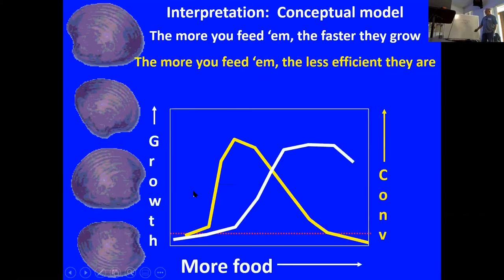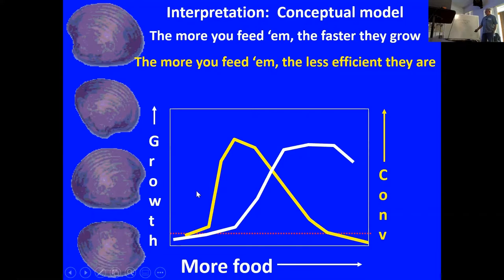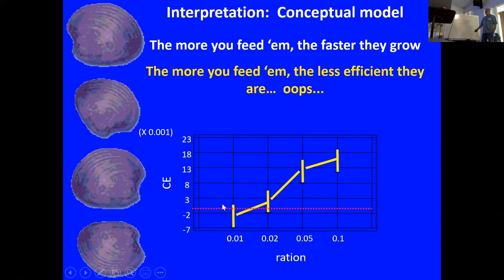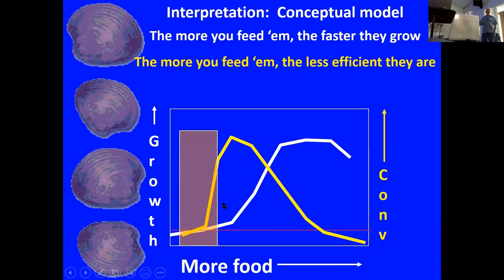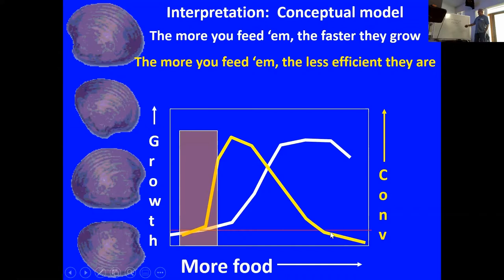Here's what we expected in terms of growth, and here's what we got. In terms of conversion efficiency, here's what we expected and here's what we got. If we assume our conceptual model is correct — as it was for oysters and bay scallops — this is where our results with hard clams fit. For the same amount of food, we are getting much less growth, and still increasing conversion efficiency even at the highest ration at every regime.